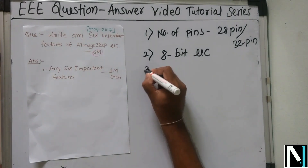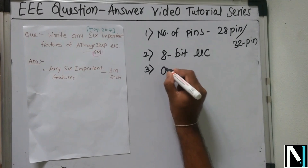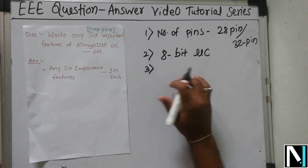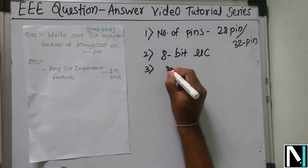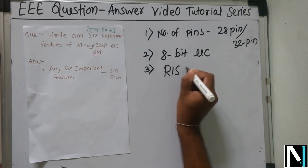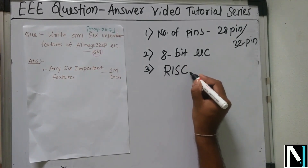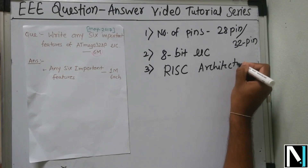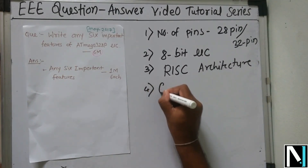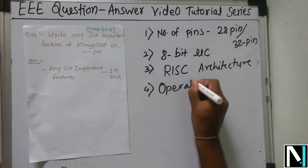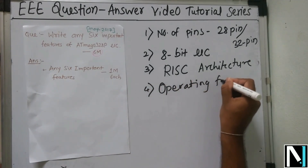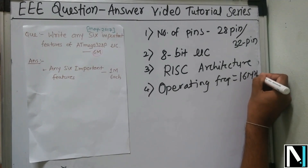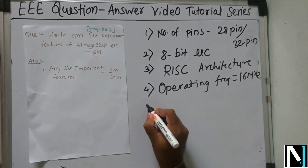Number three, the architecture used by the ATmega 328P is the RISC architecture — Reduced Instruction Set Architecture. Number four, the operating frequency is 16 MHz, which is the on-chip operating frequency.